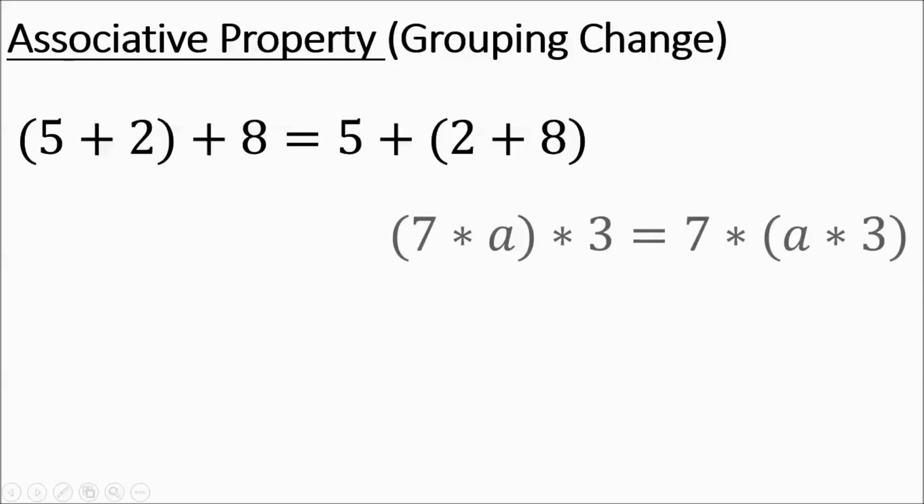Associative property is a change in grouping. There's three terms involved on both sides. We have a 5, 2, 8, and we have a 5, 2, 8. Notice how the order of them did not change. Notice how we have the two being grouped with a five. Then over here, we have a 2 being grouped with the 8. That's the grouping change. 7 times A times 3 equals 7 times A times 3. Here the A is being grouped with the 7. Now the A is being grouped with the 3.